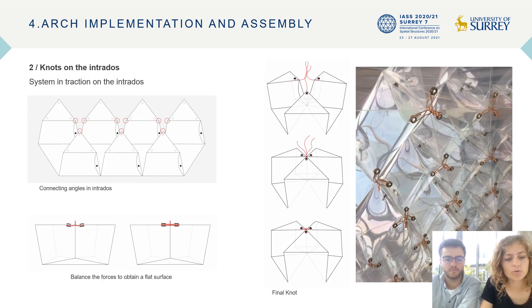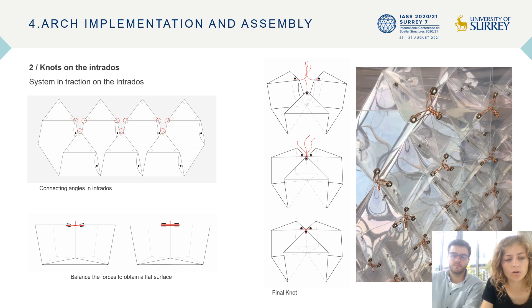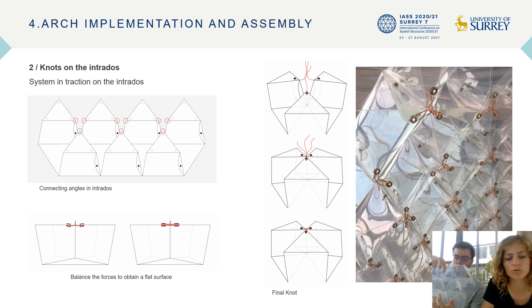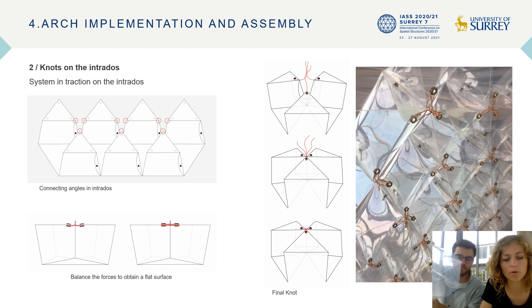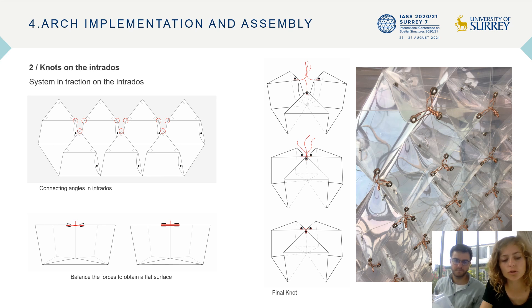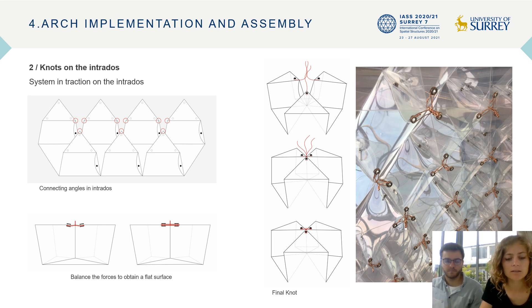When the module is assembled only with the strips, it stays flat. As the modules are closed on the intrados, it makes structural sense to have an element in traction on this part. For the knot, we tightened three copper wires from the inside and passed them through the edge in order to join the three cables together and do another knot outside the shape. This system is sufficient to prevent the shape from opening.